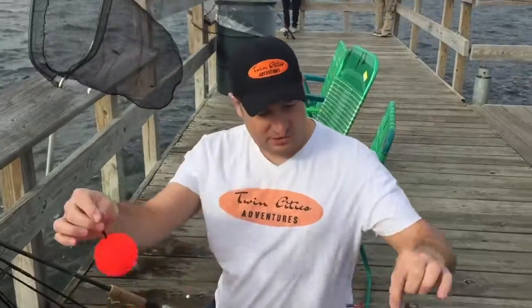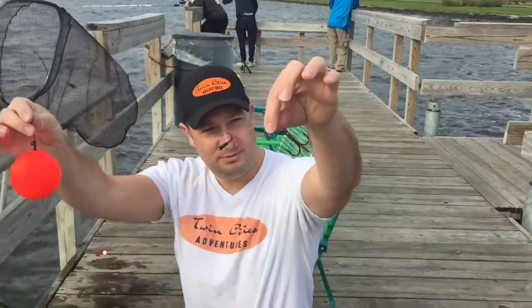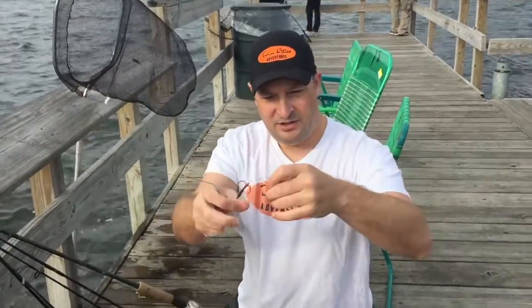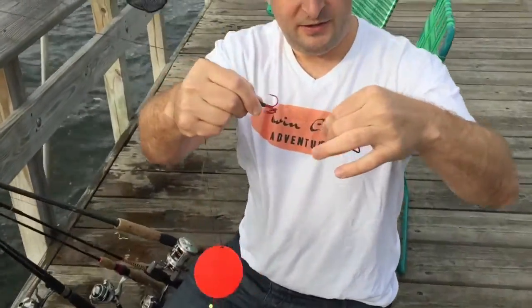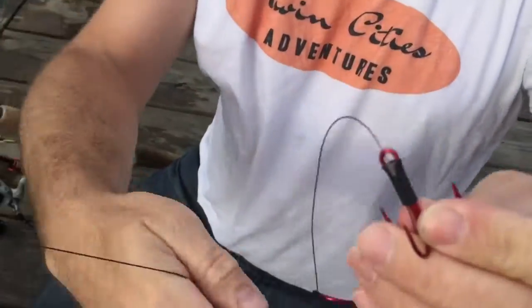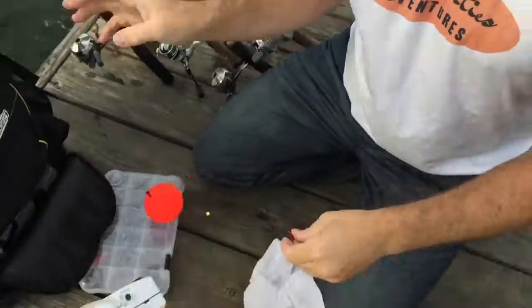This is Twin Cities Adventures at Lake Cajon. We're going musky fishing. Here's our musky rig: double treble hook. This one here slides so you can fit any size bait fish. And we've got a big huge bobber so we can hook a big one. It's a slip bobber.